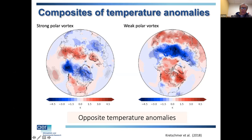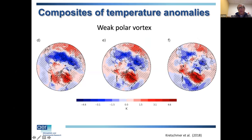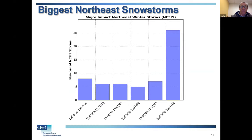Looking at weeks one, two, and three following a weak vortex, those cold temperatures migrate from Eurasia over to North America — central and Eastern North America, especially the Eastern US. So even though initially the signal seemed mostly focused across Eurasia, it does include the Eastern US. And it's not just cold air outbreaks — there are also increased snowstorms.